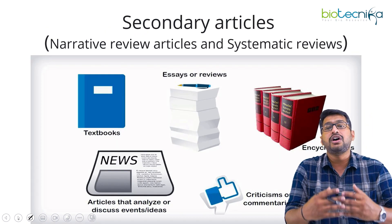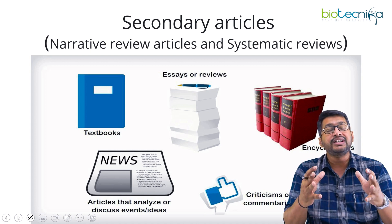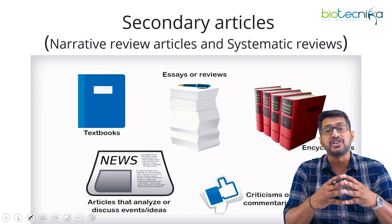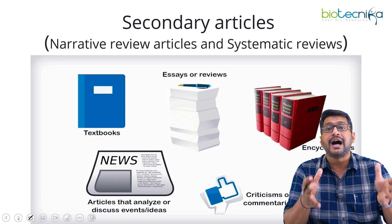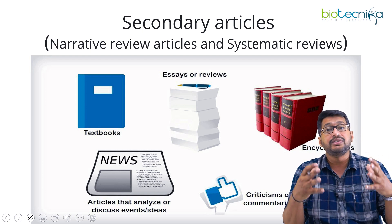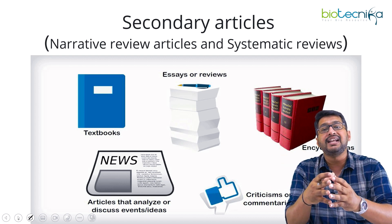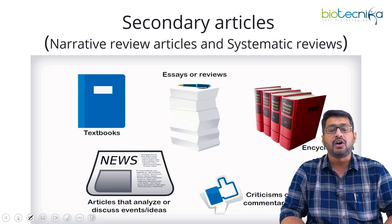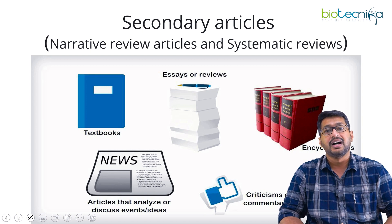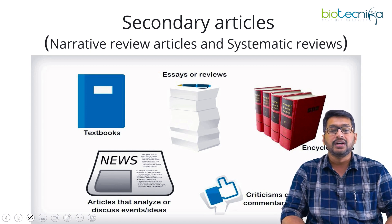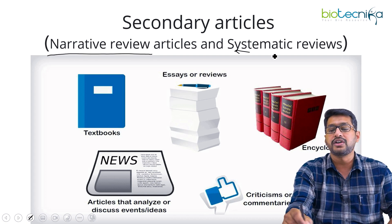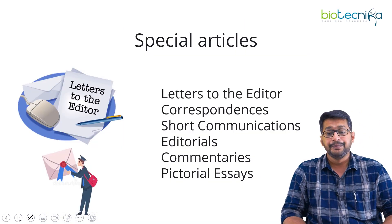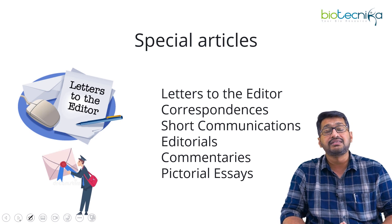For secondary sources, if you are a bit more experienced — say you have worked on your PhD thesis review of literature for the last three years — you can compile the topic of your interest into a review. This could be a short review, also called a mini review or mega review, also called a metadata review. You can go for a narrative review or a systematic review. These are sources for secondary data articles.